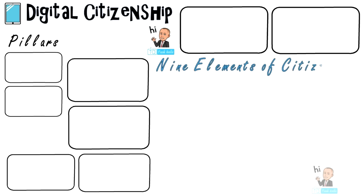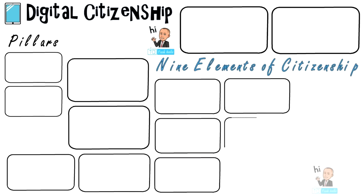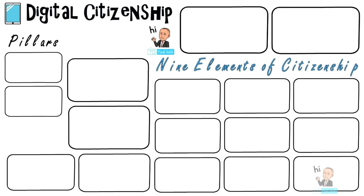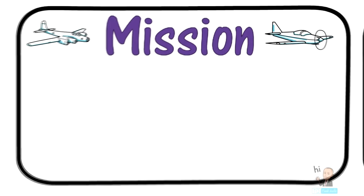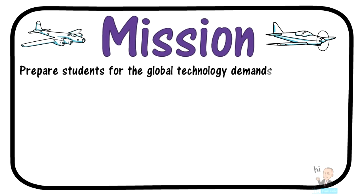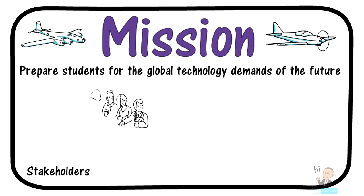Some of the topics include the two pillars of digital citizenship as well as the nine essential elements of digital citizenship, which will each be explored in detail. We're going to open up with the overall mission and purpose for students. The overall mission is to prepare students for the global technology demands of the future. Some schools may create their own individual missions with the input of various stakeholders.